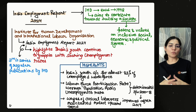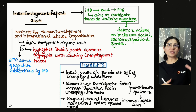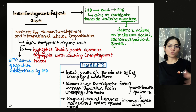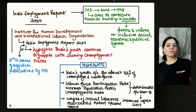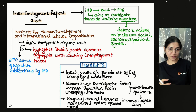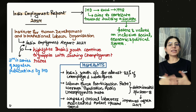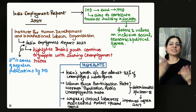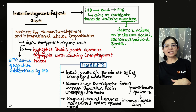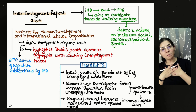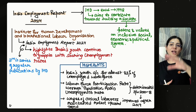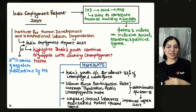The India Employment Report is the third in the series of publications by IHD. The IHD institute was established in 1998 to help society become more inclusive, because if we know about the employment status we can work on it. Until we don't know, we won't act on it.